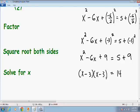The x minus 3 times the x minus 3 is a perfect square so that can just be written as x minus 3 squared is equal to 14. And now we can move on to our last step.